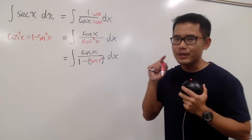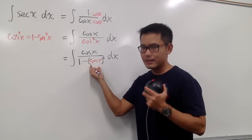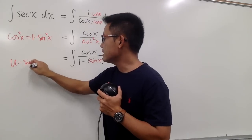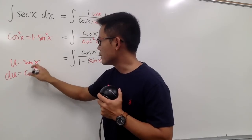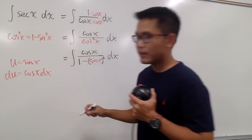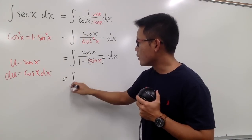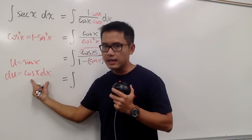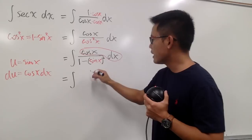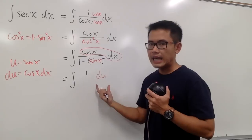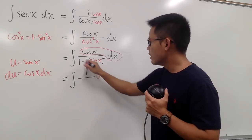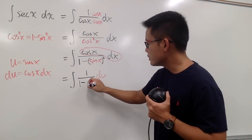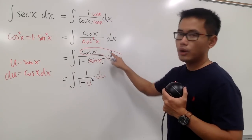Multiplying top and bottom by cosine x gives us the integral of cosine x over cosine squared x dx, which is cosine x over 1 minus sine squared x dx. Now we can use u-substitution. Let u equal sine x, so du equals cosine x dx. The top cosine x dx becomes du, and the bottom 1 minus sine squared x becomes 1 minus u squared. So we are integrating 1 over 1 minus u squared du.